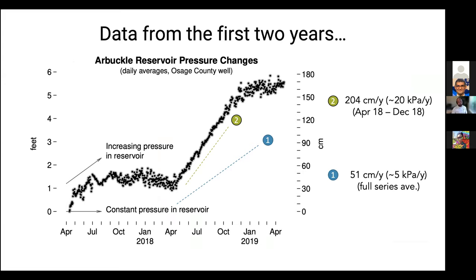Data from the first two years shows relative changes from the level at which we started monitoring. If the data points trend to the right, pressure in the reservoir is constant. If they trend upward, that indicates increasing pressure. We saw distinct trends — a sharply increasing period from April to December 2018 — but the average for the full series is slightly lower, at about five kilopascals per year.